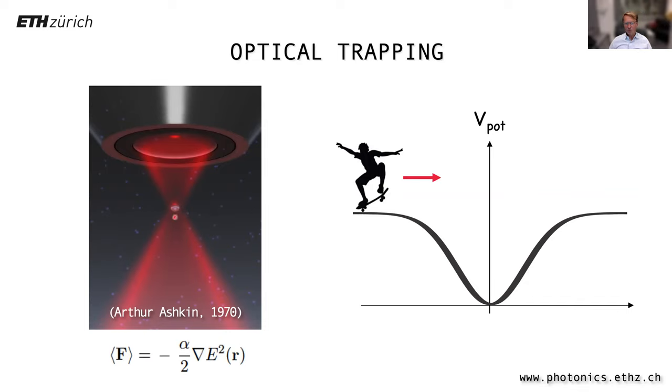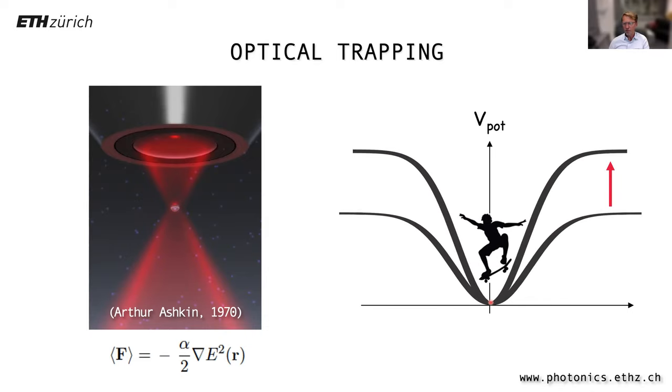The laser tweezer usually operates in gas or solution with viscosity. Because it's viscous, there's a Stokes drag force. A particle pulled into the laser focus gets stuck because of friction. But if we evacuate this, there is no friction. This is like a skateboarder entering a half pipe - if there's no friction, the skateboarder will come out with the same velocity.